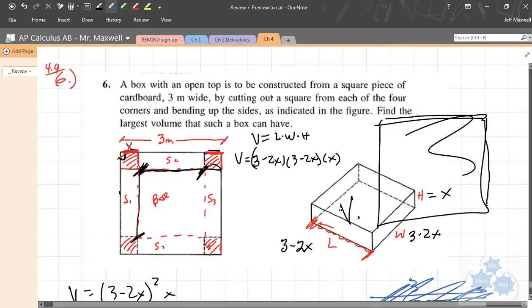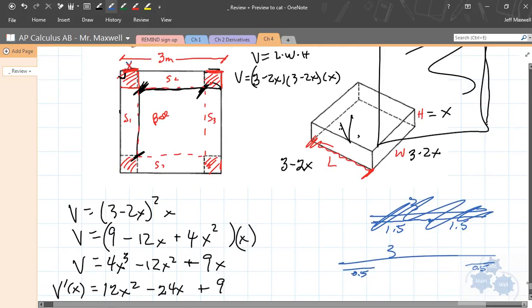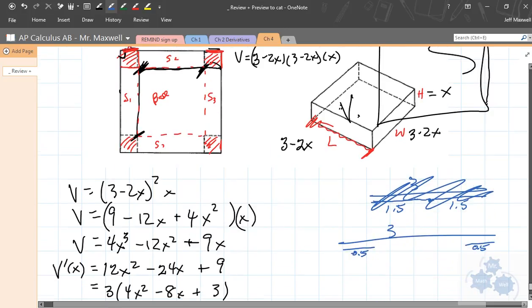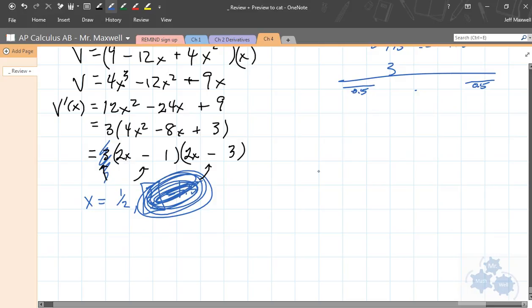So you could actually just sort of use your intuition here and say, wait a minute, if x was 1.5, that means the width of my box, 3 minus 2 times 1.5, I have a width and a length of 0. Doesn't make sense. So you're going to go with 0.5. And the question actually says, find the largest volume the box can have. So you know we have a critical number at 0.5. This one's going to give you a minimum, right? It's the 1.5. You have a minimum volume of 0. That's your minimum. So here is going to be your maximum. You can guarantee it.